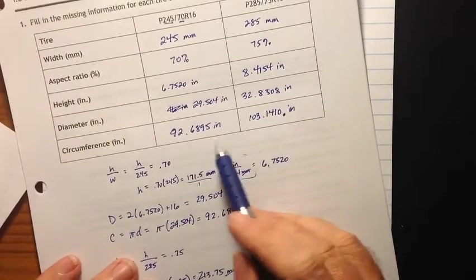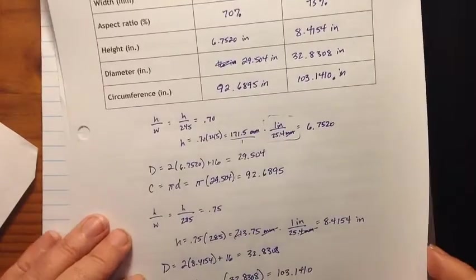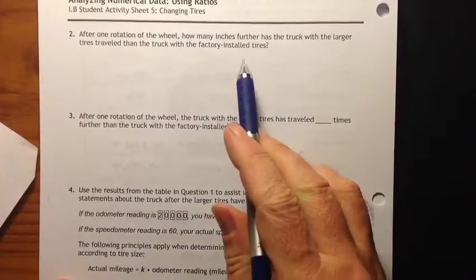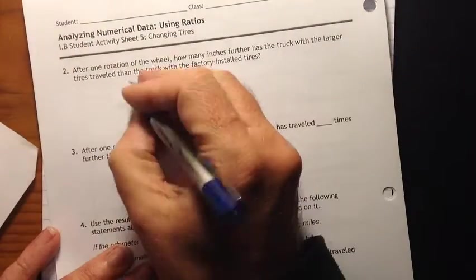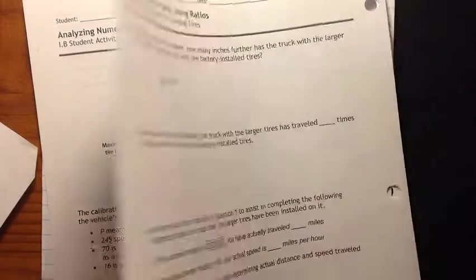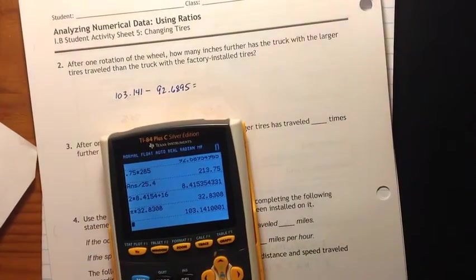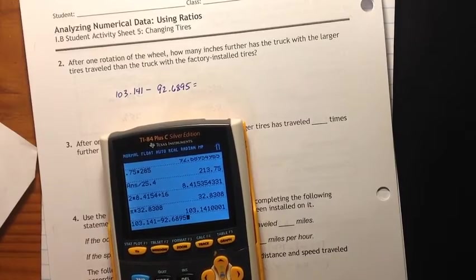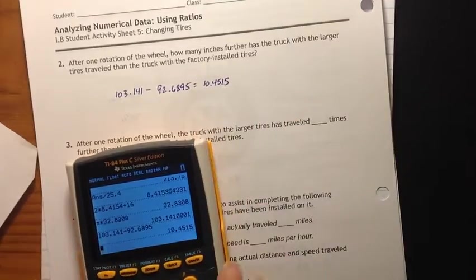There should not be a little dot there. All right. So we've got about a little bit more than 10 inches here. A little bit more than 10 inches here. In fact, I think that's our first question on the next page. So, after one rotation of the wheel, how many inches further has the truck with the larger tires traveled than the truck with the factory installed tires? So we have 103.141 minus 92.6895.